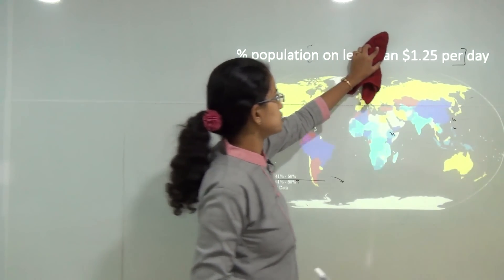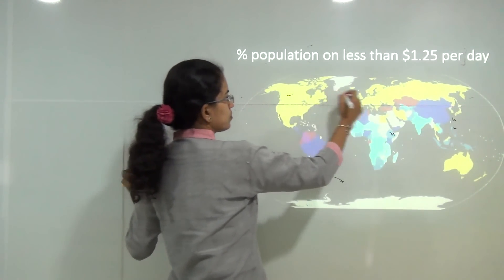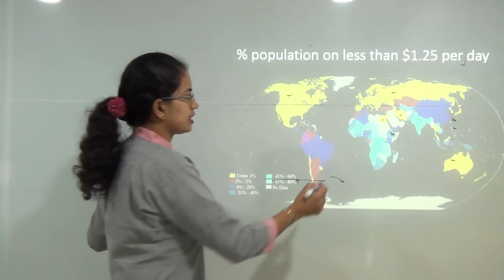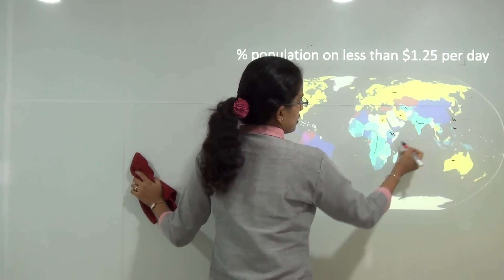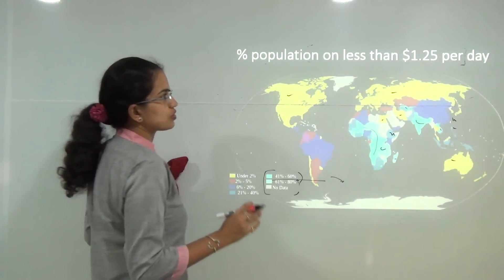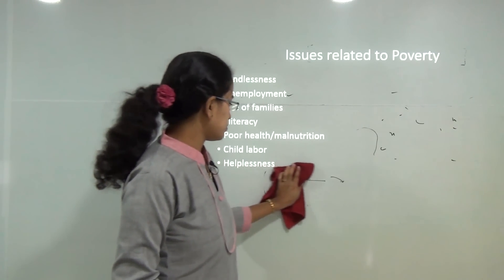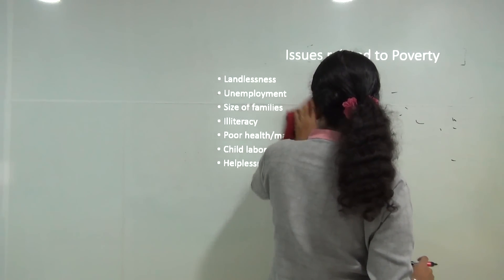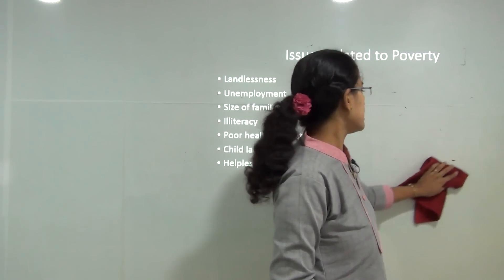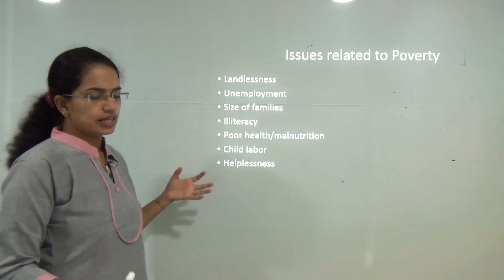A world map shows areas with less than $1.25 per day income. Nations marked in yellow are well-to-do with less than 2% under this threshold, while areas in light blue are zones of severe distress where more than 40% of people do not earn $1.25 per day. Issues related to poverty include landlessness, family size, illiteracy, poor health facilities, malnutrition, child labour, and joblessness.